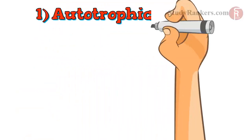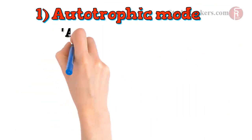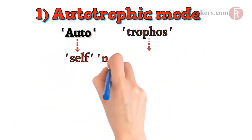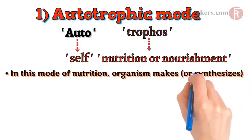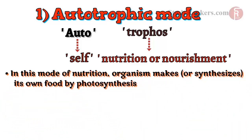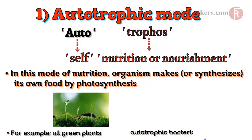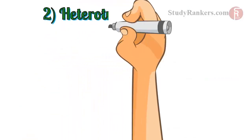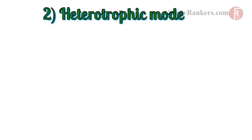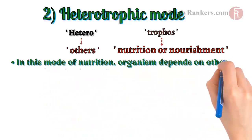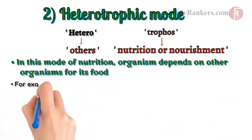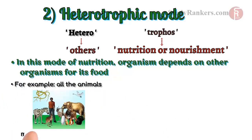The first one is autotrophic mode. In this mode of nutrition, organism makes or synthesizes its own food by photosynthesis. For example, all green plants and autotrophic bacteria. The second one is heterotrophic mode. As the name suggests, hetero means others and tropho means nutrition or nourishment. In this mode of nutrition, organisms depend on other organisms for their food. For example, all the animals — man, dog, cat, lion etc. — most bacteria and fungi.